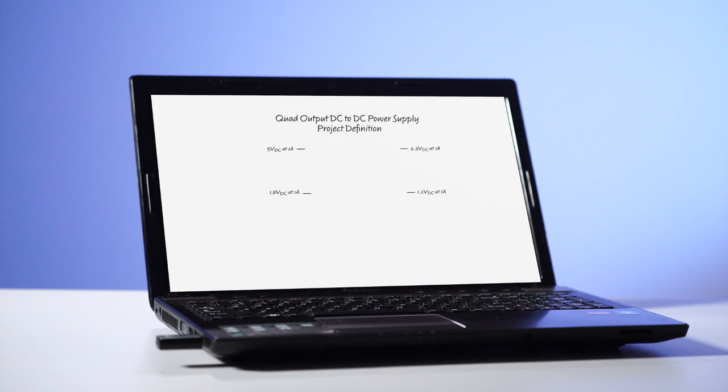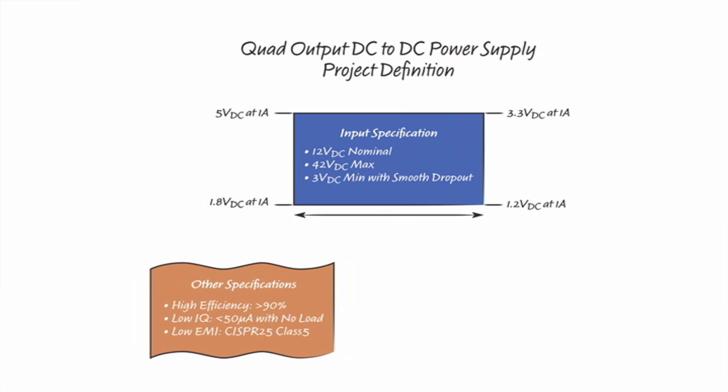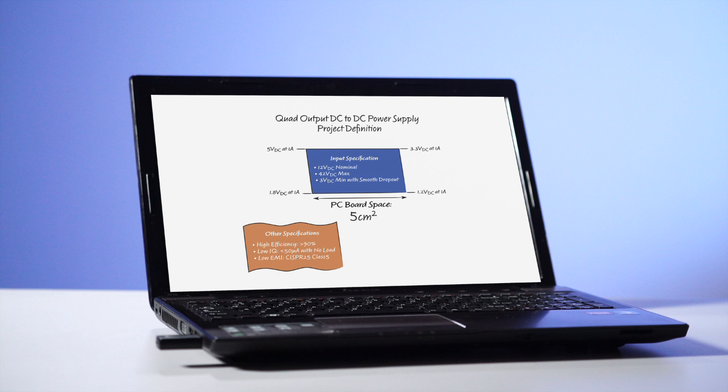Good morning Jim. Your project is a four output switching power supply. The input voltage range is 3 volts to 42 volts. It must be short circuit protected, have low operating IQ, and meet CISPR 25 EMI requirements. You have five square centimeters. Good luck Jim.